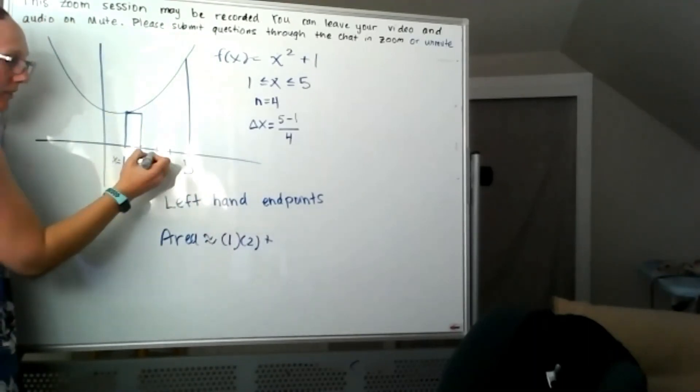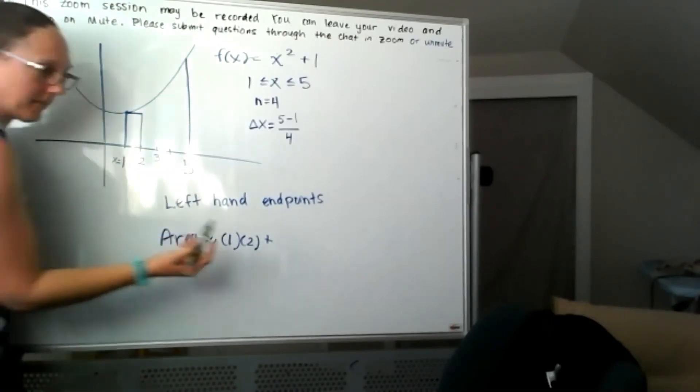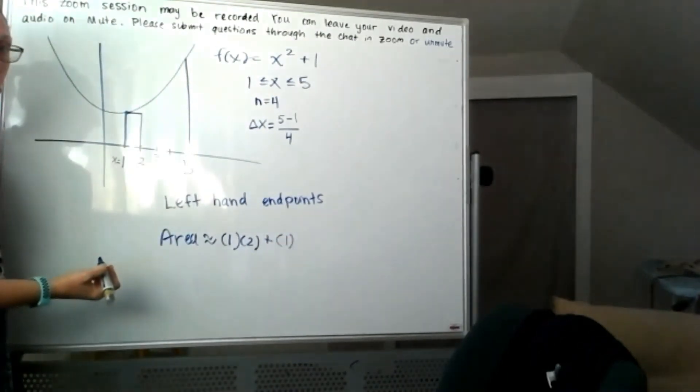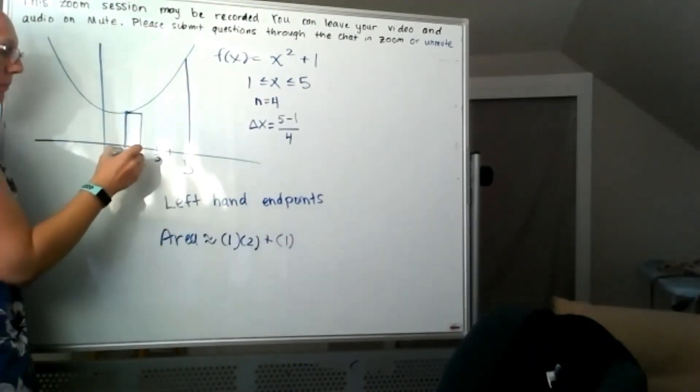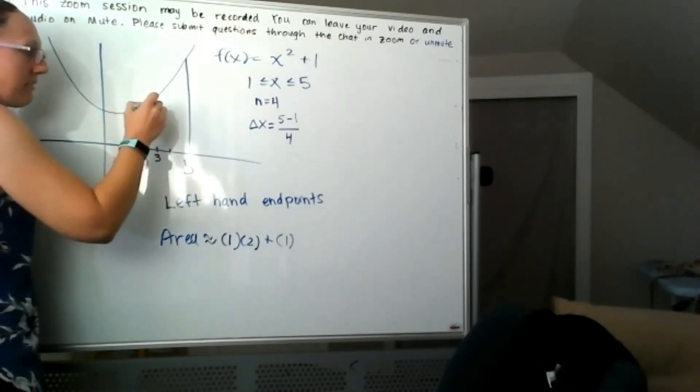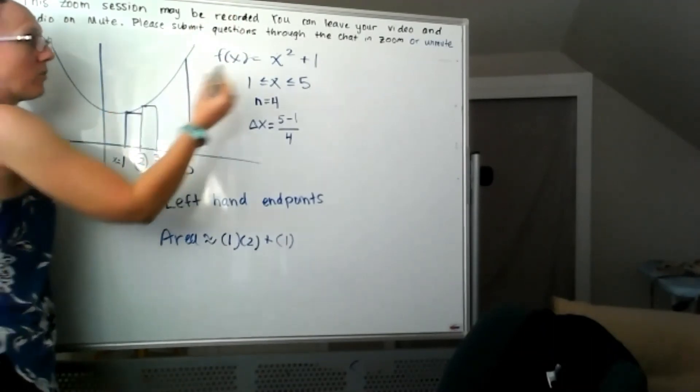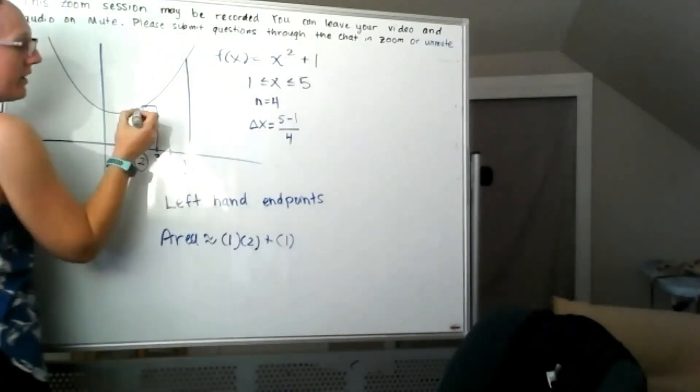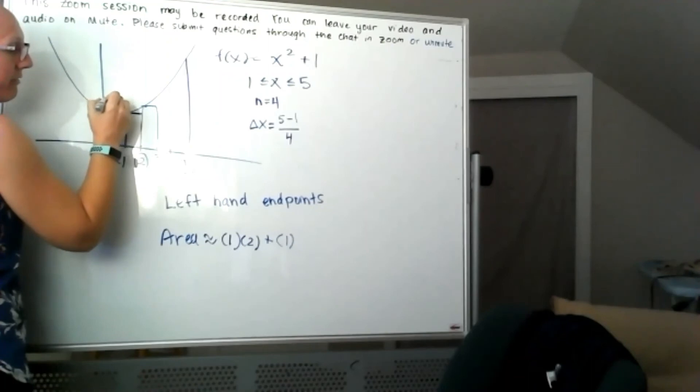For that next rectangle, that width between 2 and 3, again the width of my rectangle is 1, but I'm going to get the height by plugging in 2 into the function to figure out the height. So if x is 2, then I'll be at 2 squared plus 1, so now I'm actually at a height of 5.